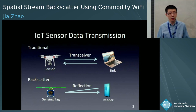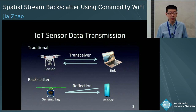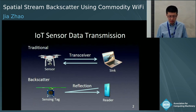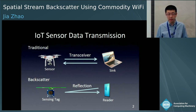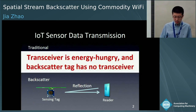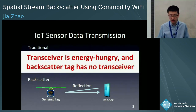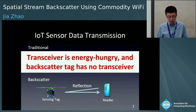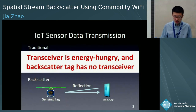In a backscatter system, a tag can transmit information by changing its antenna impedance, deciding whether to reflect the excitation signal or not. An external radar generates the excitation signal and decodes the tag information. Since the transceiver is an energy-hungry component in a wireless system, backscatter communication has the potential to largely reduce power consumption on portable sensors or mobile sensing devices.